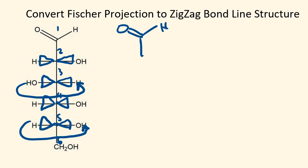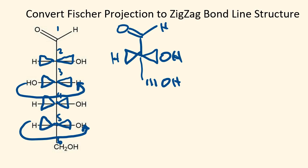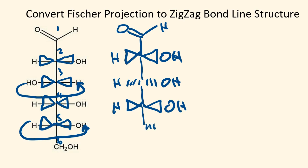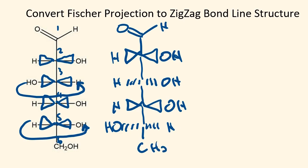Carbon one is unchanged, as is carbon two. Carbon three is flipped, so now the hydroxyl is on the right side on a wedge, and the hydrogen is on the left side on a dash. Carbon four is unchanged — hydroxyl to the right on a wedge, hydrogen to the left on a wedge. Carbon five is flipped, putting the hydrogen on the right on a dash and the hydroxyl on the left on a dash. And here's carbon six at the bottom.